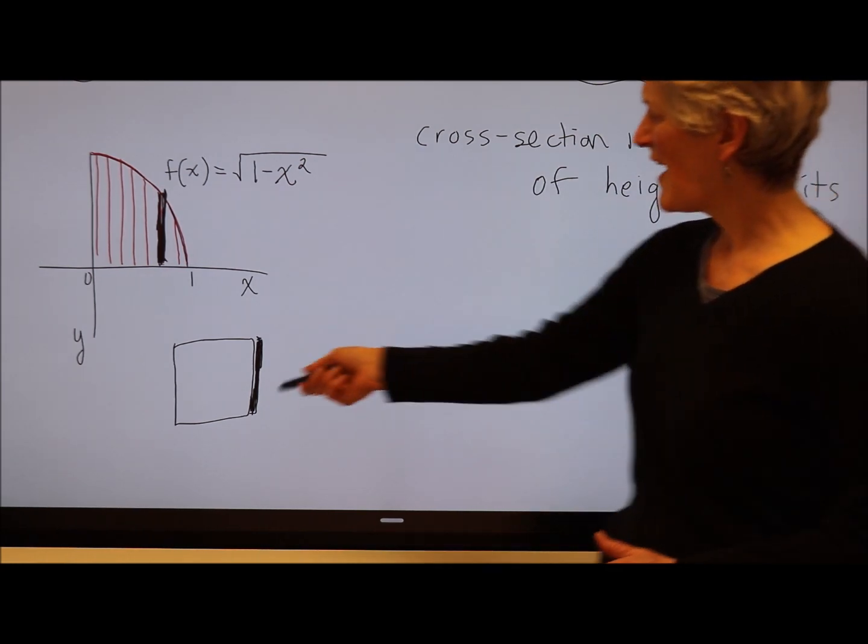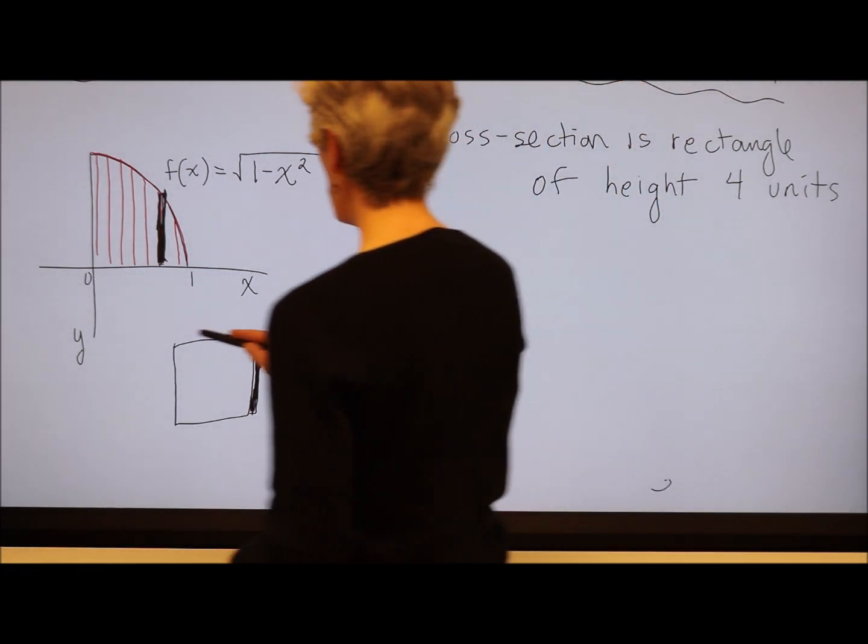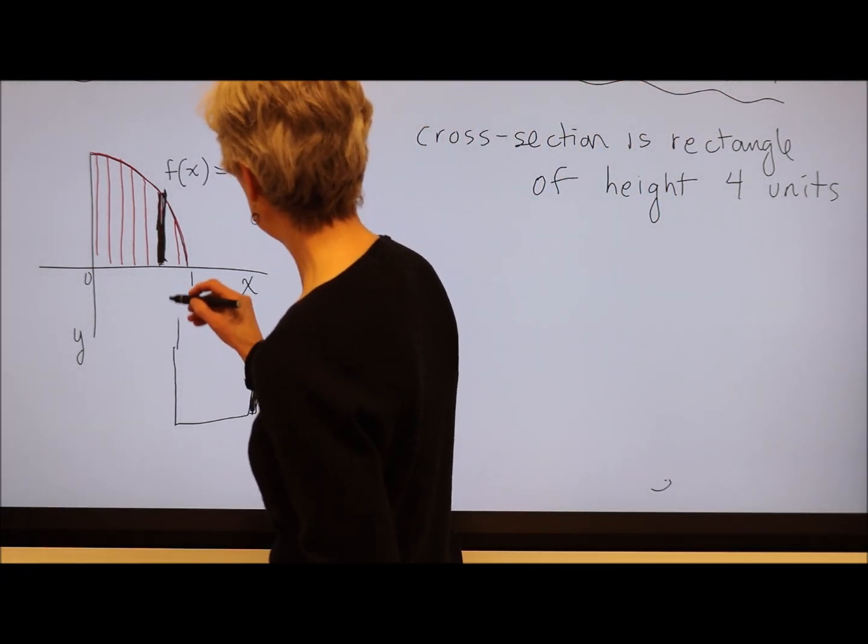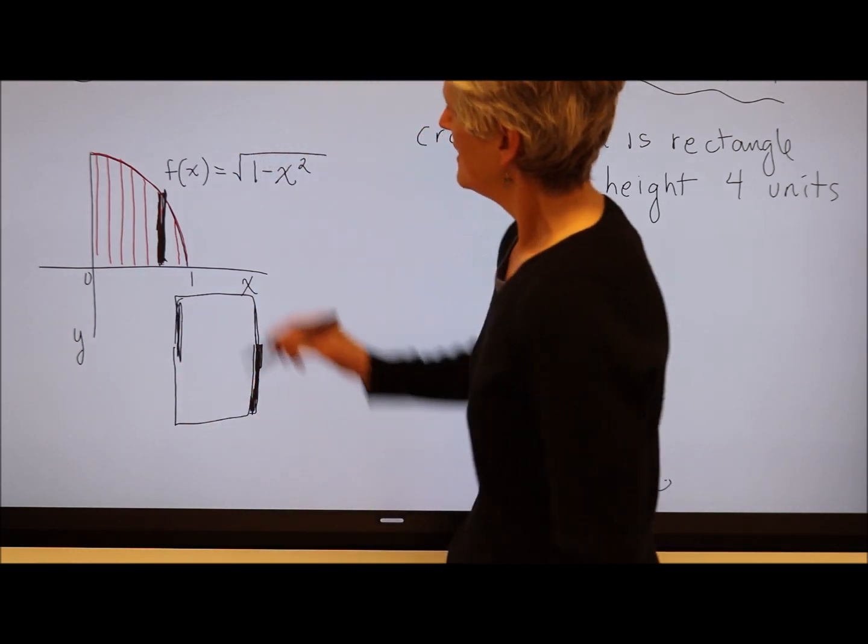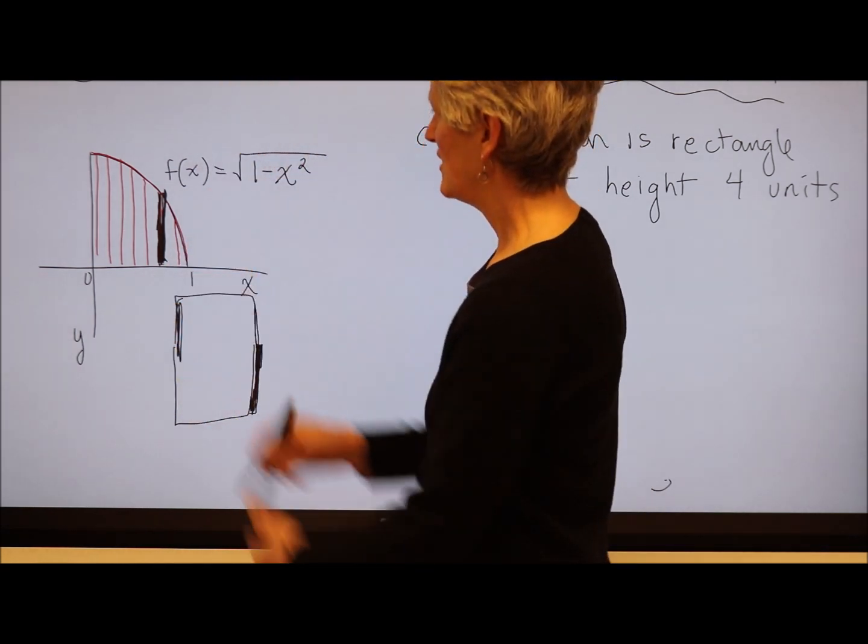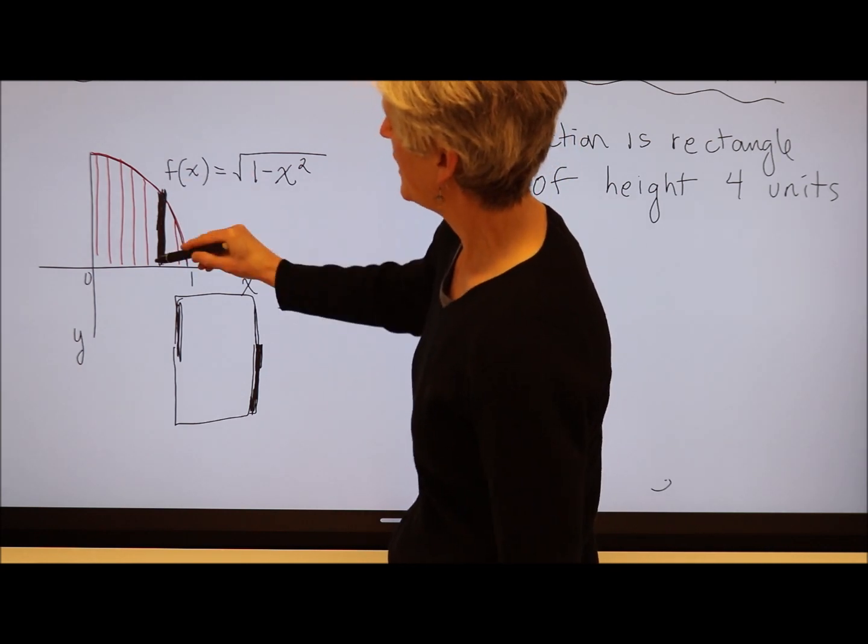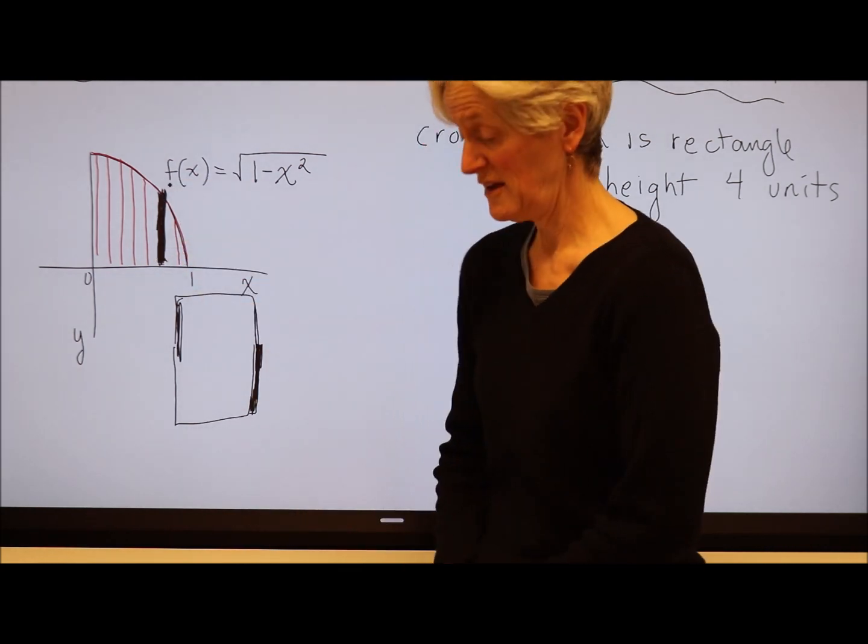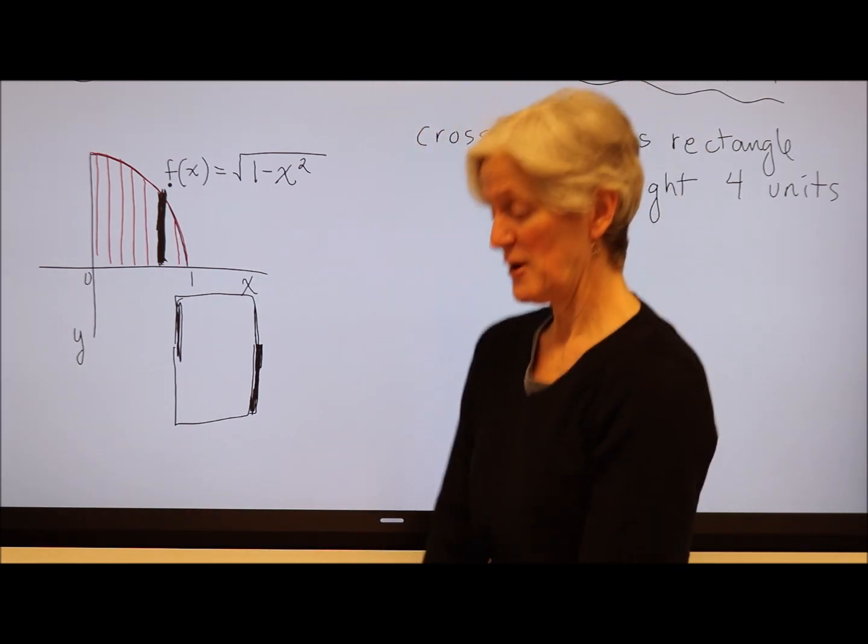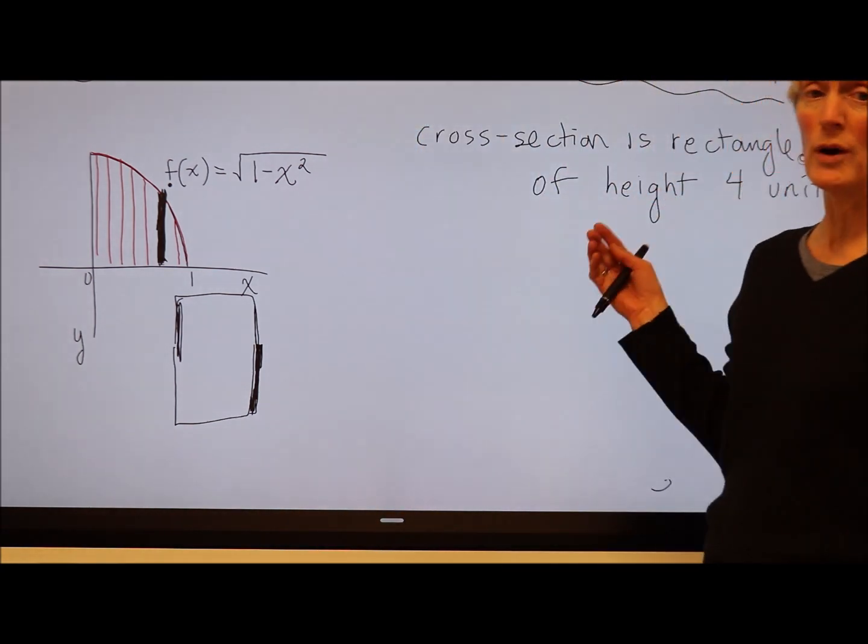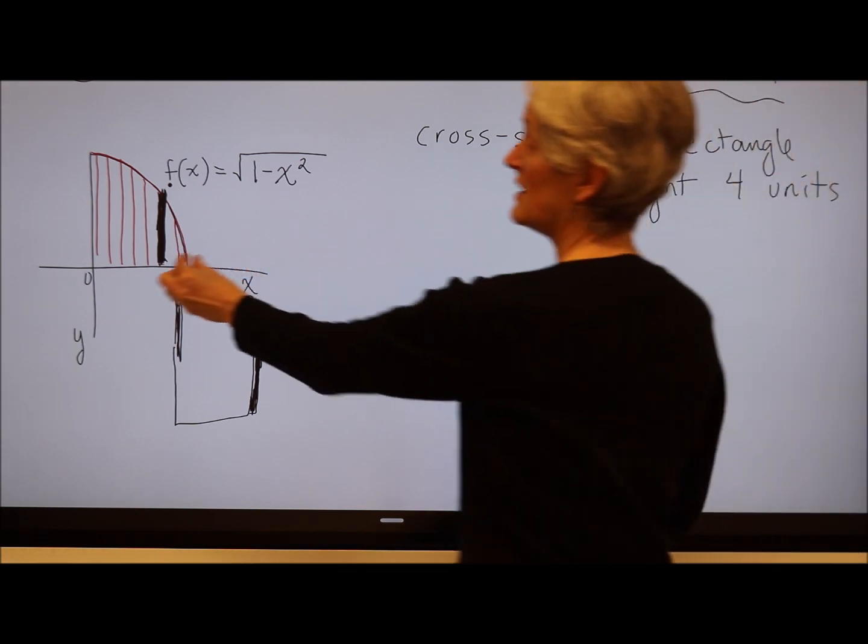Okay, so now instead of having a square piece of bread, I have a rectangular piece of bread. Right? My orientation here is a little funny, but the distance between the curve and the x-axis is one dimension of my rectangle. The other dimension of my rectangle is always just going to be 4. The thickness is still going to be dx.